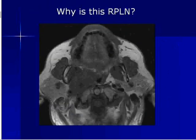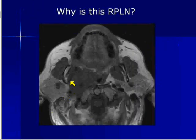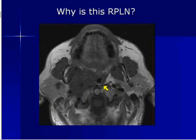So why is this a lateral retropharyngeal lymph node? If you notice, this is not the jugular vein — this is the internal carotid. Here's the normal side. This is the internal carotid. This is the longus coli, longus capitis, depending where you are in the oropharynx or nasopharynx. And in between the internal carotid and the prevertebral muscles is where the lateral retropharyngeal lymph node lives.